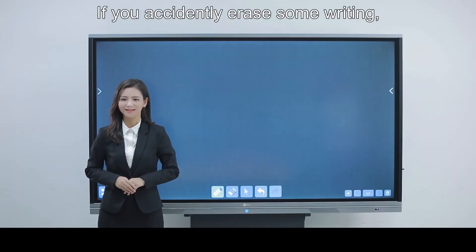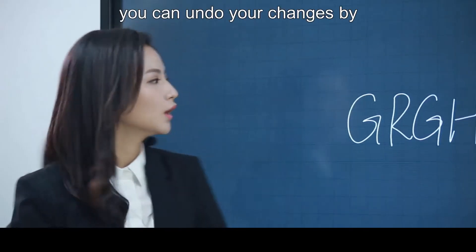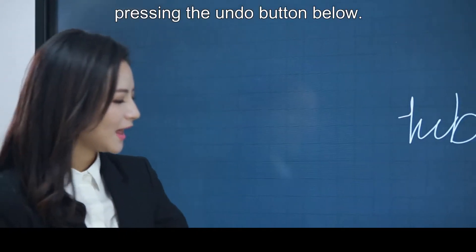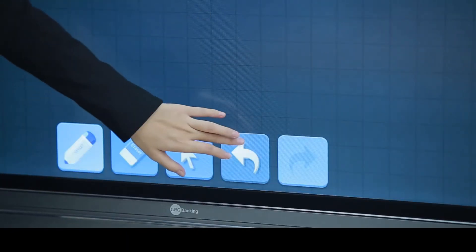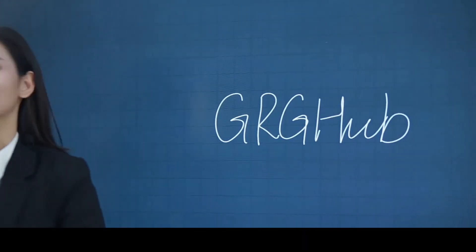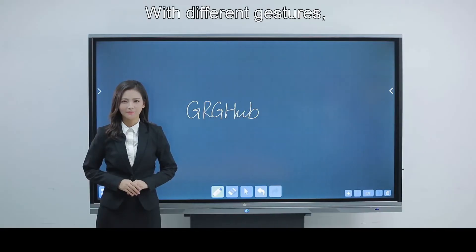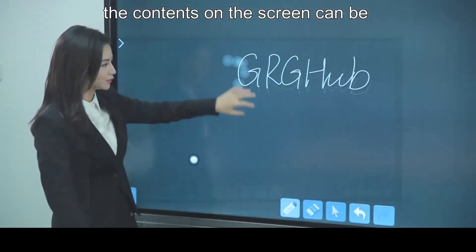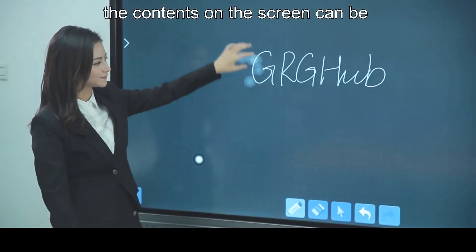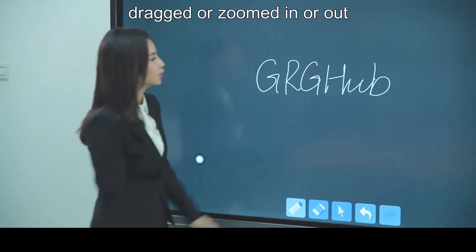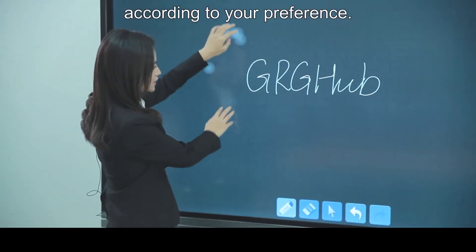If you accidentally erase some writing, you can undo your changes by pressing the undo button below. With different gestures, the contents on the screen can be dragged, or zoomed in or out according to your preference.